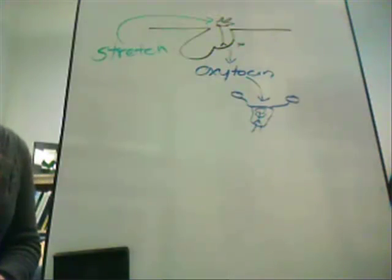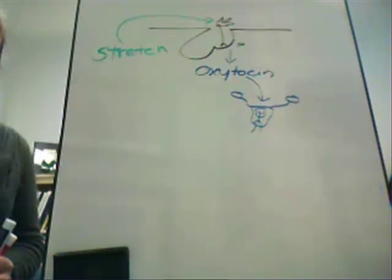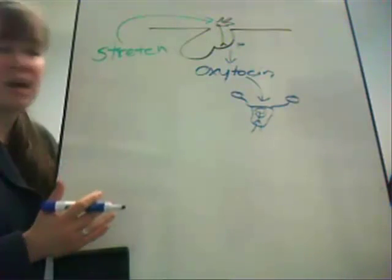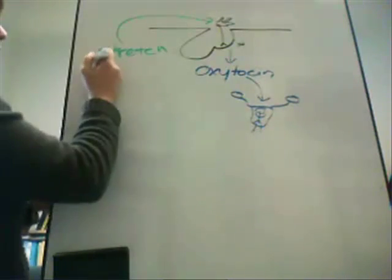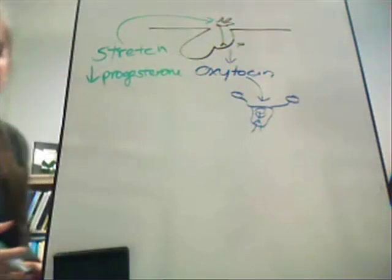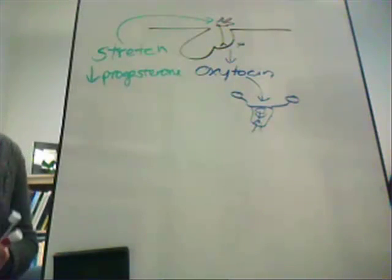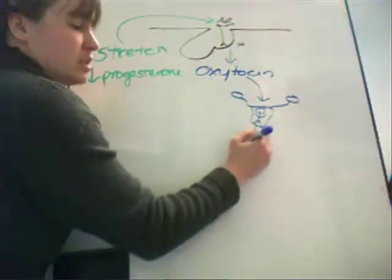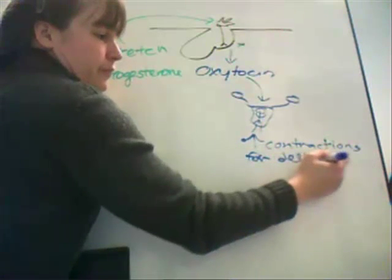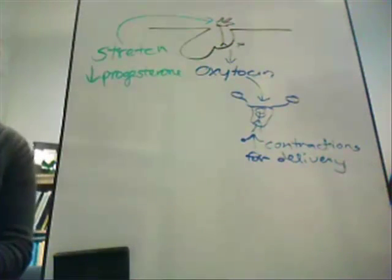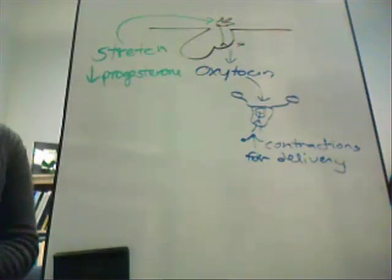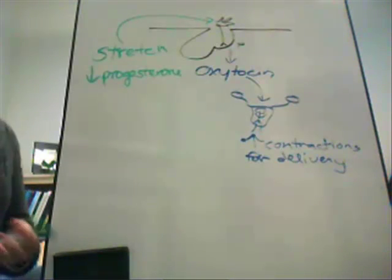The bigger the stretch, the more oxytocin is released. As the uterus gets closer to delivery, more and more receptors are up-regulated. Once we get large amounts of oxytocin and progesterone levels fall at the end of the pregnancy, oxytocin increases contractions for delivery, expelling the fetus from the female's body.